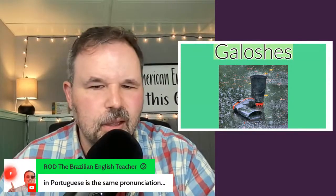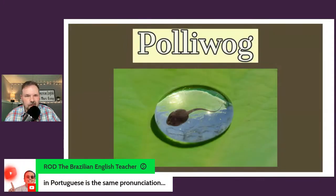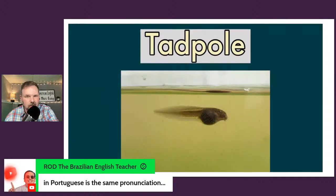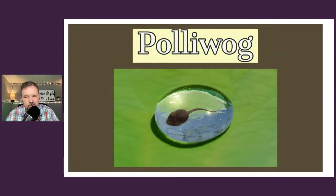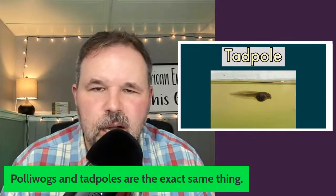The next words are 'polliwog' and 'tadpole.' These animals will often be in ponds. I wanted to film a video where there were polliwogs, but it's too early in the year. These are the little things that are not eggs and not frogs yet — they're in between. In the United States it is very popular to catch polliwogs and tadpoles. You will hear both words — polliwog and tadpole — and they mean the exact same thing.